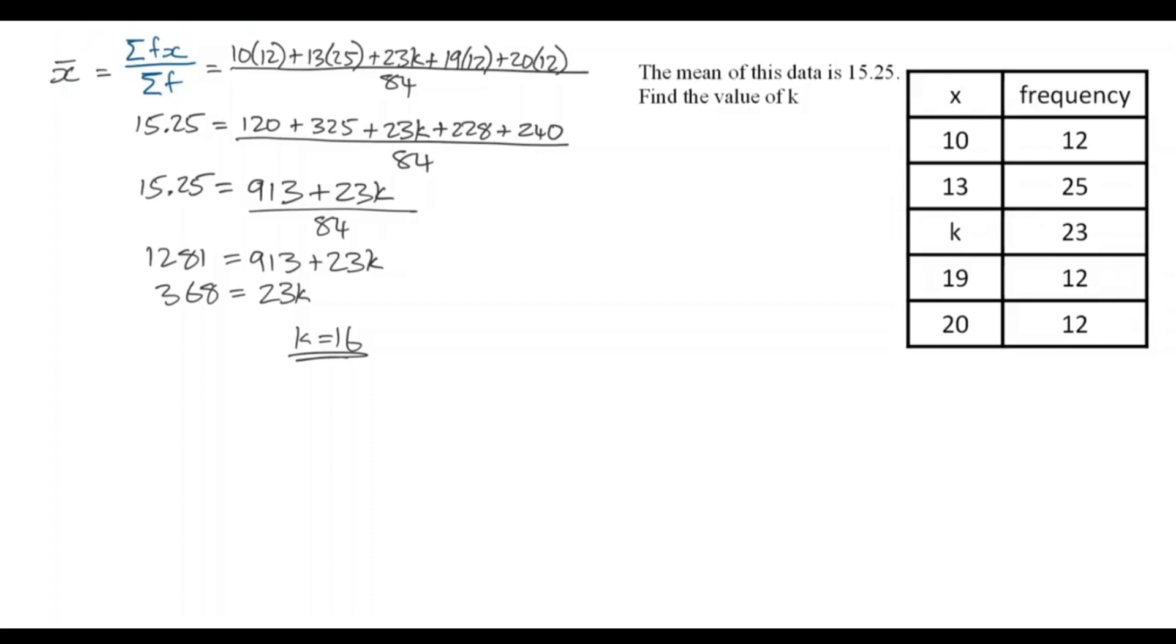Secondly, for a more formal sense check, we can actually just calculate the mean of the table now that we have a value for K. Just substitute in 16 for K and go ahead and calculate the mean. I'll leave you to do that one for yourself and verify whether or not 15.25 is the answer we get.